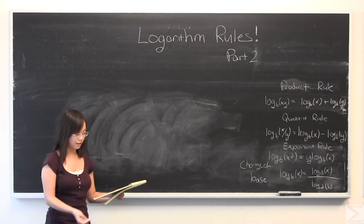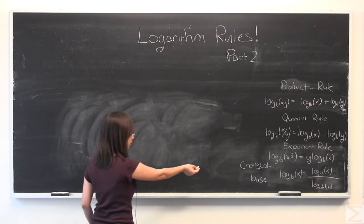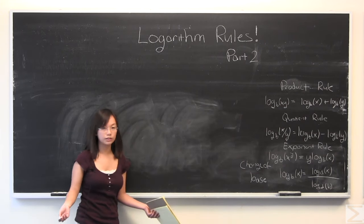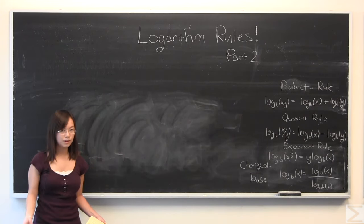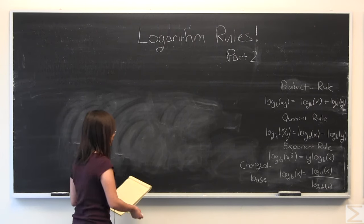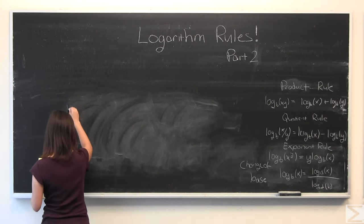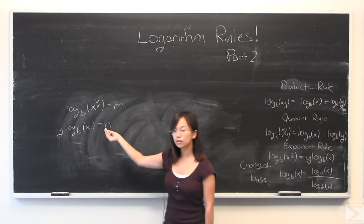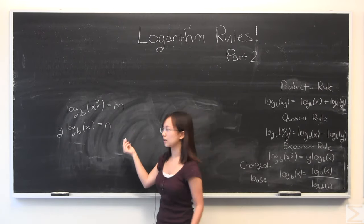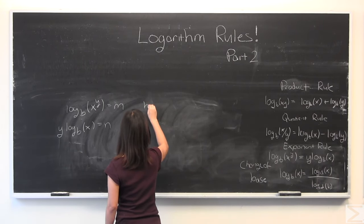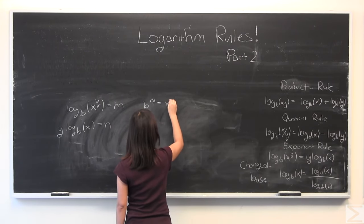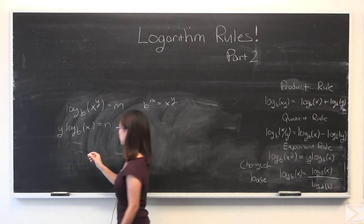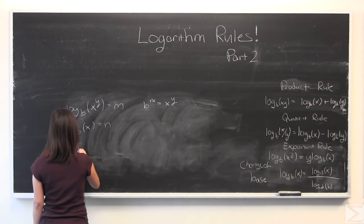I'm going to prove that to you, and I'm also going to give you an example. So the exponent rule is written over here. I'm going to use this. If you were here for the first part, I'm going to use a kind of similar way of solving this, or proving this. So if you remember, we can write this in an equivalent statement.